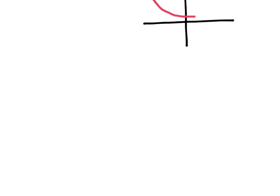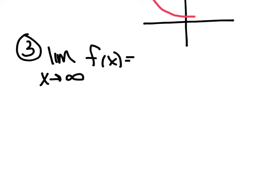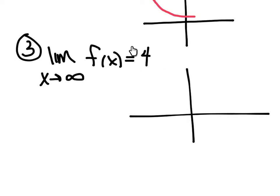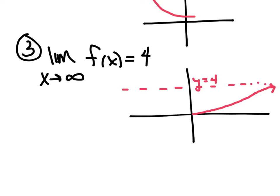Now picture this one: the limit as x approaches infinity of f of x equals 4. As you approach infinity on the x-axis, your height is stopping — it's getting close to, it's intending to reach a height of 4. So as I approach infinity, I'm only ever reaching a height of 4. That's implying you have created a horizontal asymptote at y equals 4. You're not going above it, not going below it — you are approaching it.